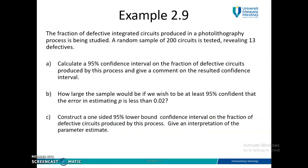Look at this example: the fraction of defective integrated circuits produced in a photolithography process is being studied. From the first sentence, can you see — is it a mean or is it a proportion? Proportion usually has two outcomes: defective or non-defective, true or false, yes or no. They are talking about the fraction of defective integrated circuits, so you have defective and non-defective. Most probably this is a proportion question.